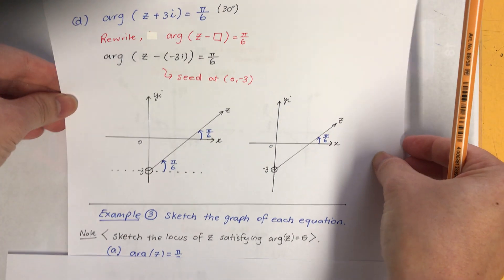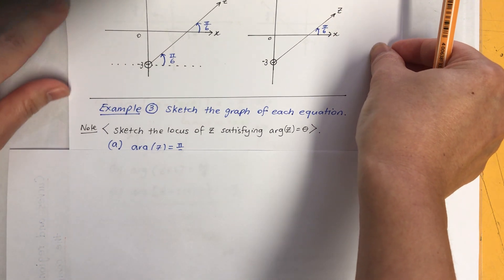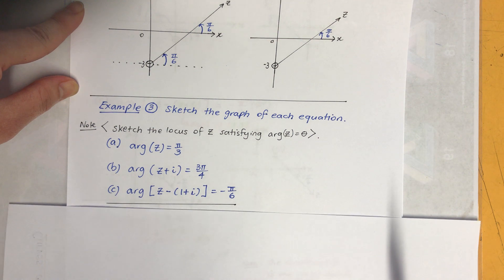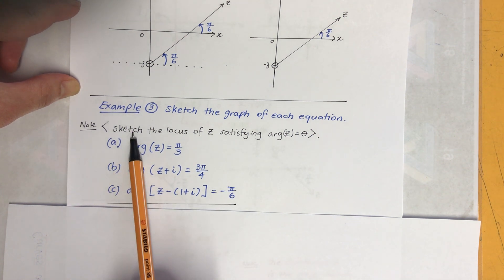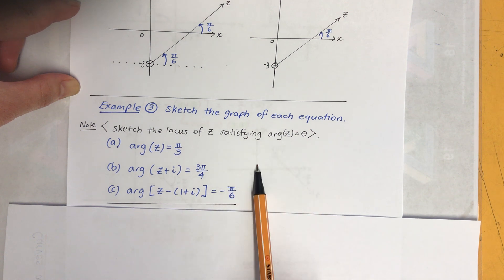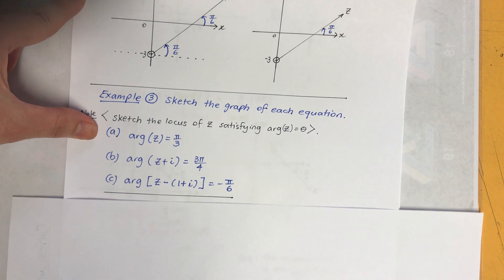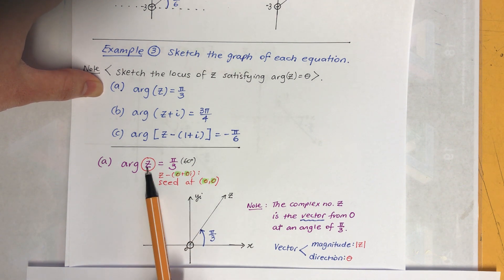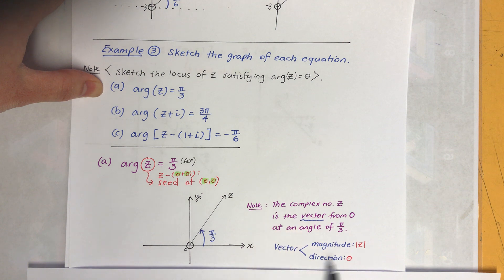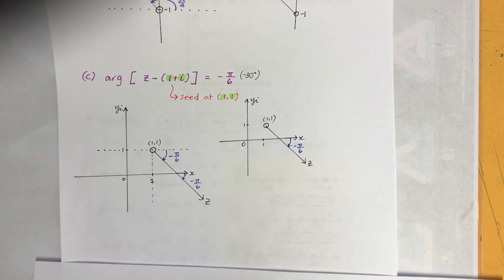Now let's do some examples. Example 3: sketch the graph of each equation — sometimes phrased as 'sketch the locus of z satisfying the condition.' Part a looks straightforward: z by itself has seed at (0, 0) and goes up by π/3, which is 60 degrees. Note that the complex number z is the vector from the origin at an angle of π/3; a vector has both magnitude and direction.